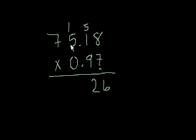7 times 5 is 35, plus the 1 is 36. Put the 6 here. Carry the 3. And then 7 times 7 is 49, plus 2 is 52. So we'll just put 52 here.